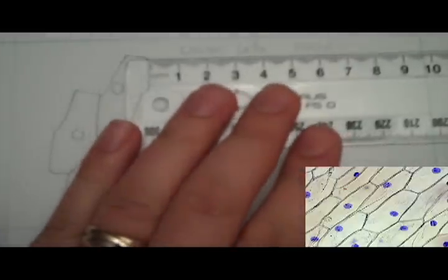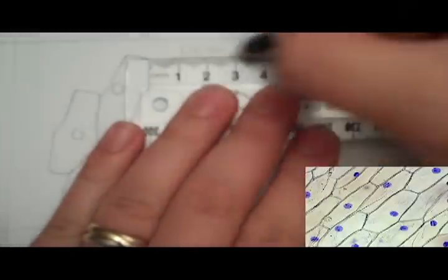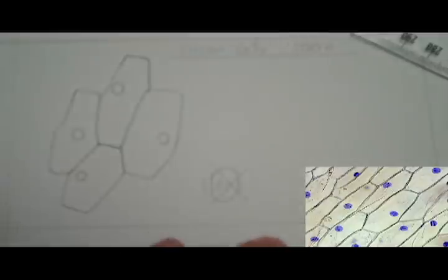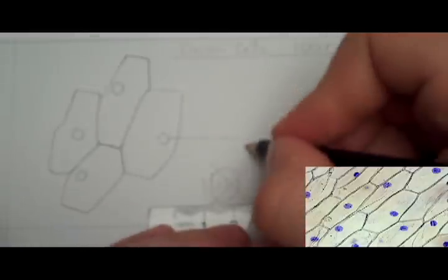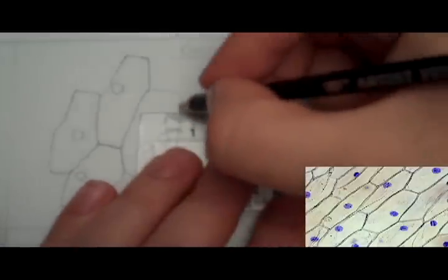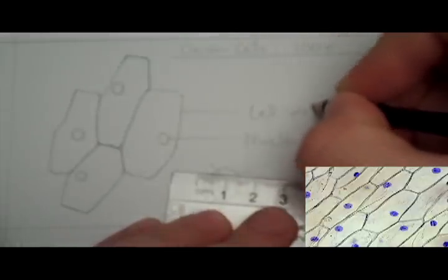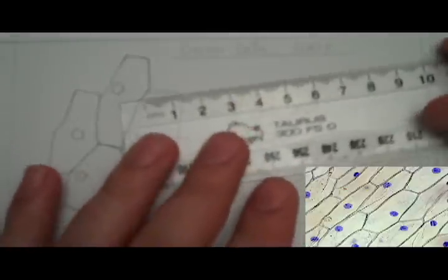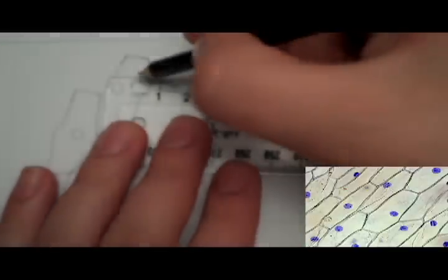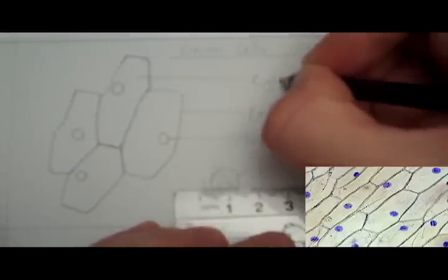And then you also need to include labels. And your labels need to be done with straight lines also. So I'm going to label the nucleus, the cell wall, and the cytoplasm.